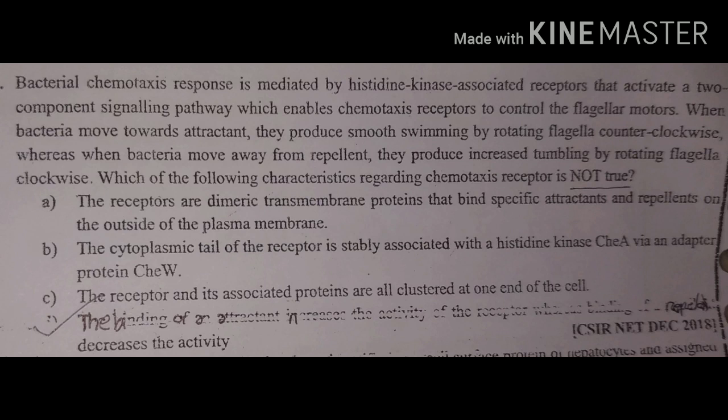Option A states the receptor is a dimeric transmembrane protein that binds to specific attractants and repellents on the outside of the plasma membrane. This is correct because attractants and repellents are in the form of ligands that bind to the receptor. Option B states the cytoplasmic tail of the receptor is stably associated with histidine kinase CHEA via adapter protein CHEW.